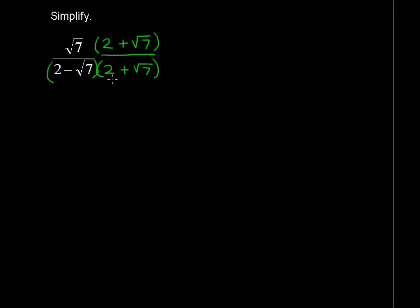Now the reason this will work, this will get rid of the radical, is this product of a sum and a difference. And we'll get a difference of squares as a result. So it's tied in with that special products idea.